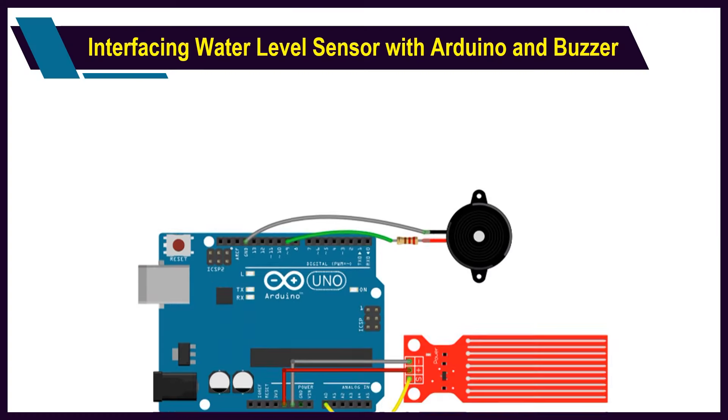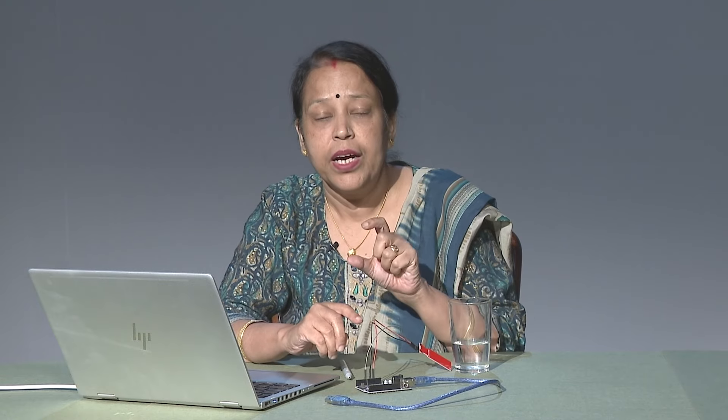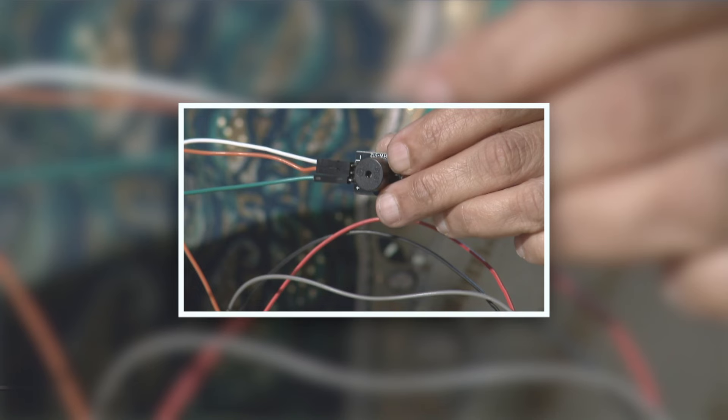Next, we can also show this water level sensor with the help of a buzzer. If we set some threshold value — maybe 500, 600, or 700 — fixed in the program, then if the water level exceeds that threshold value, the buzzer will beep. Here we have shown a 2-pin buzzer, but we will demonstrate with a 3-pin buzzer where the signal pin is also available.